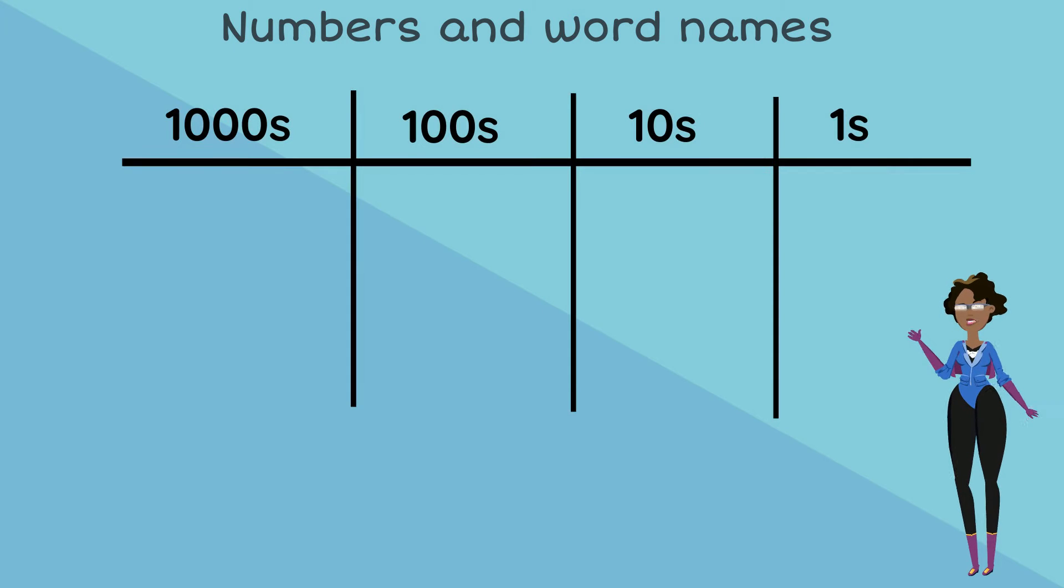We can use place value tables that help us identify the digits in a number, given its numerical form, after which we can write the word name for the number.